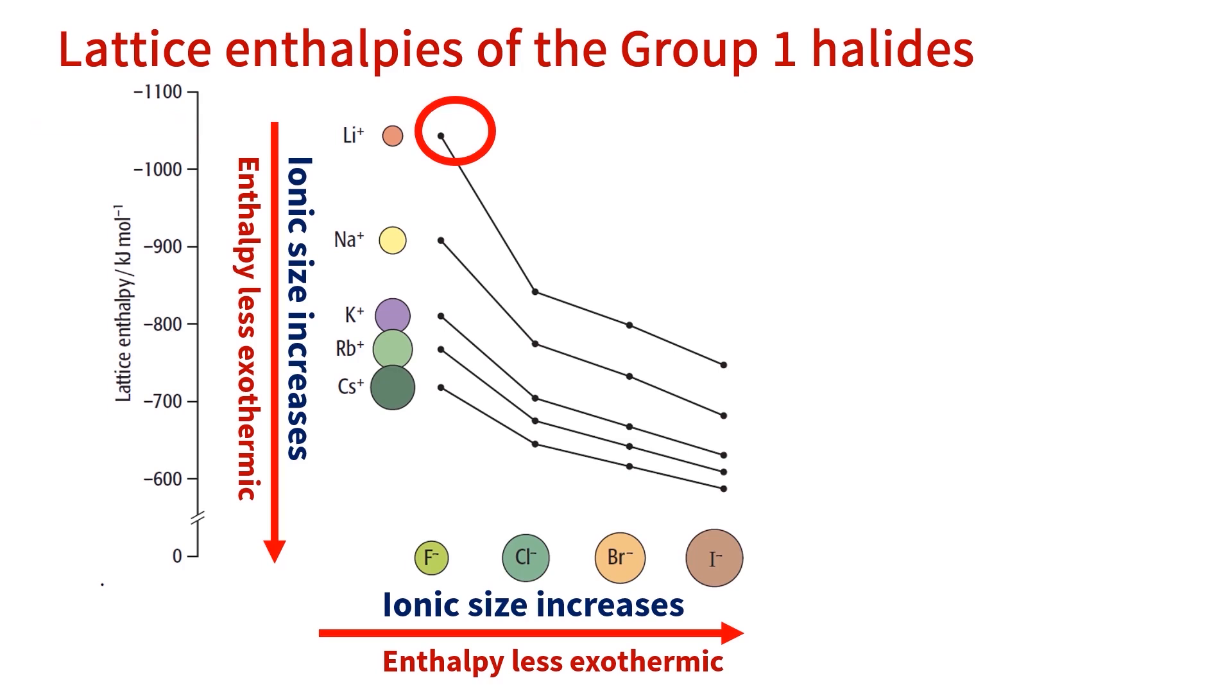At the same time, moving down Group 7 halides, chlorine ion has a larger ionic size than fluorine ion. Accordingly, chlorine ion has less charge density than fluorine ion. We can see from the graph that sodium chloride lattice enthalpy is less exothermic than sodium fluoride.